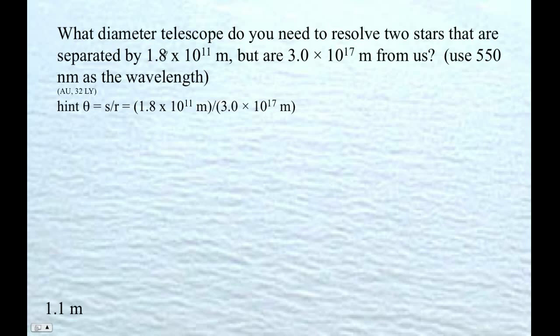What diameter telescope do you need? They are separated by 1.8 times 10 to the 11th meters. This is solar system length scale - one astronomical unit is about 1.5 times 10 to the 11th meters.